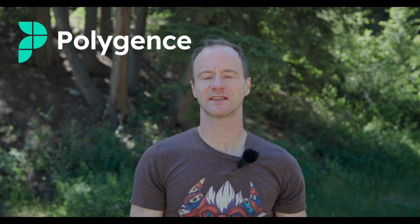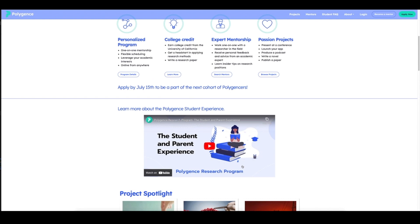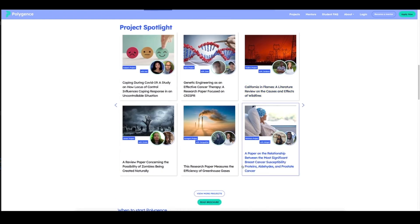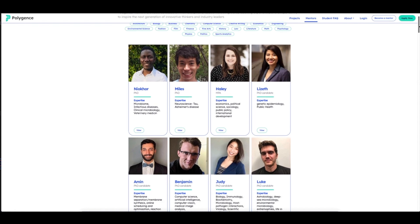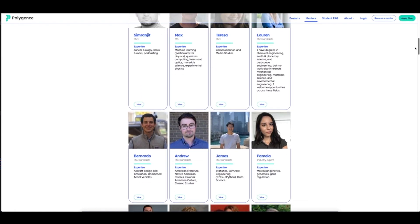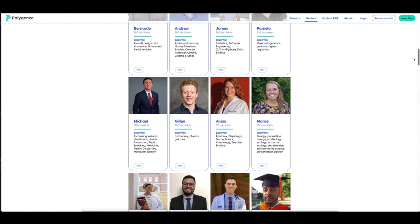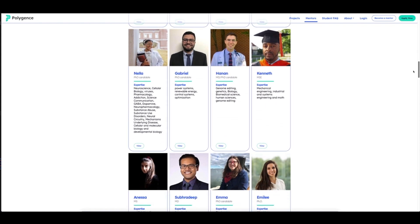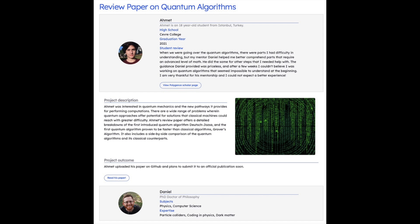Now I'd like to talk about the very exciting sponsor for today's video, PolyGents. PolyGents is an online research academy started by a Stanford PhD. PolyGents is dedicated to pairing driven students with top-tier academics and practitioners for one-to-one mentorship. This is a fantastic opportunity for high school students to dive deep into a topic of their interest while being guided by a mentor who is an expert in their field. I'm particularly excited about Ahmet's project about quantum algorithms. In fact, I have linked their review paper below if you want to check it out. It is currently being edited for publication. And this is not out of the ordinary.